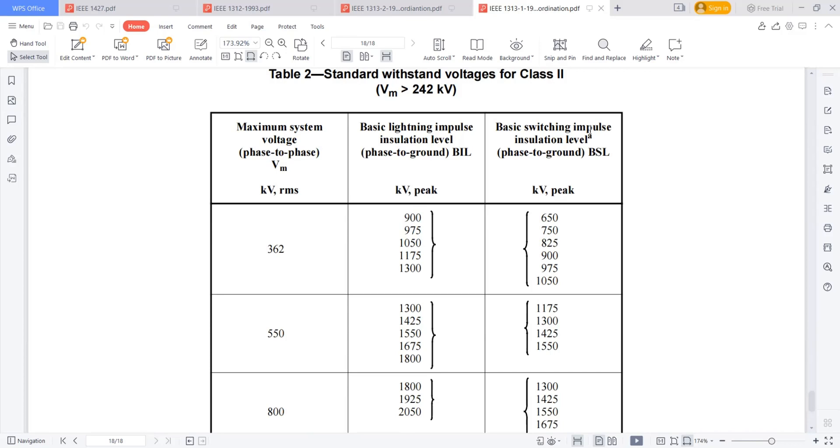The switching impulses generally occur due to the switching operations. In the high voltages only, we can see the switching operations, which results in transient recovery voltages, which may lead to the switching overvoltages.